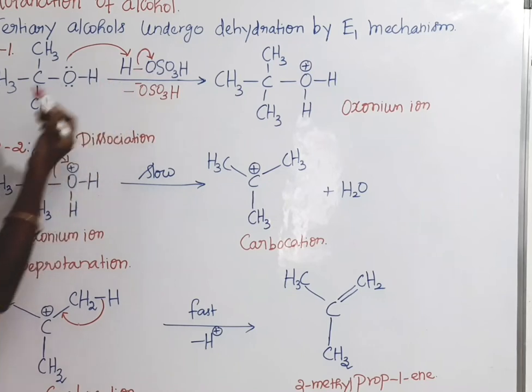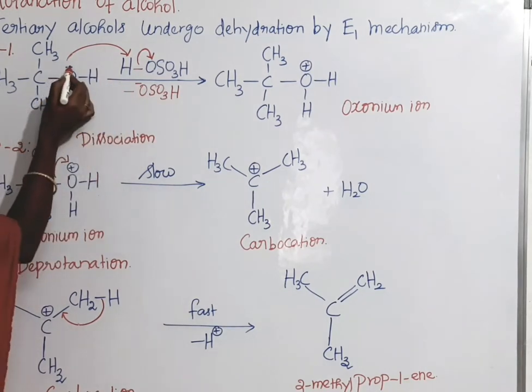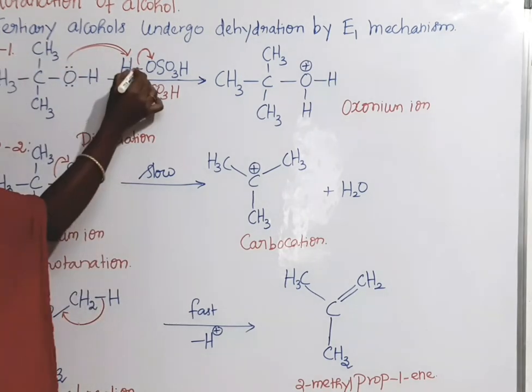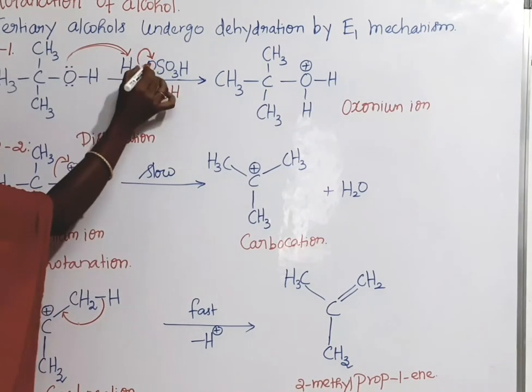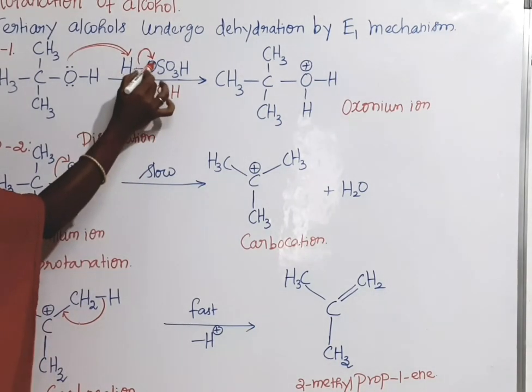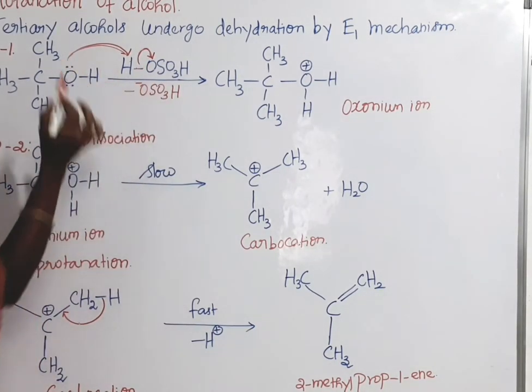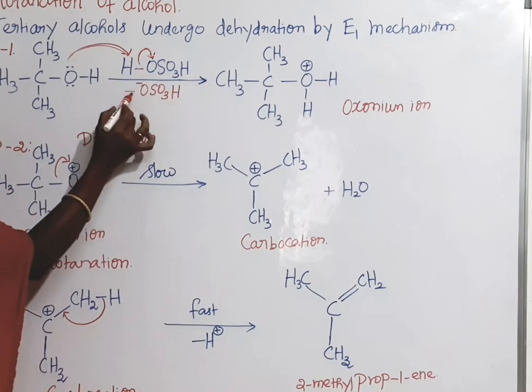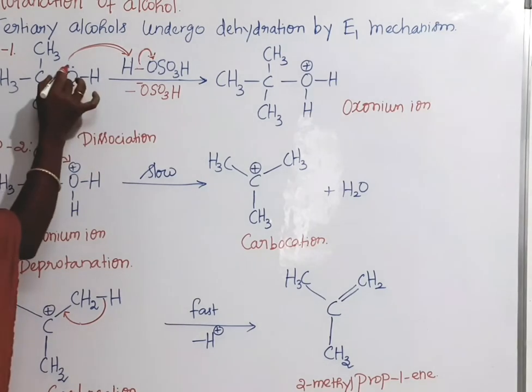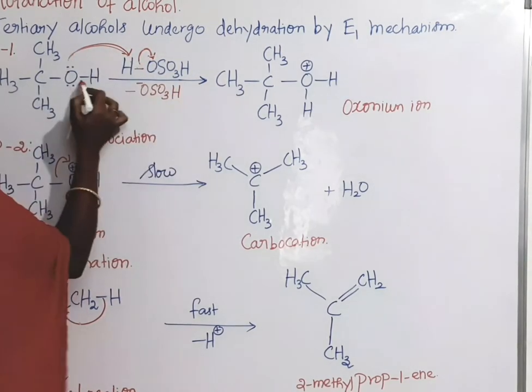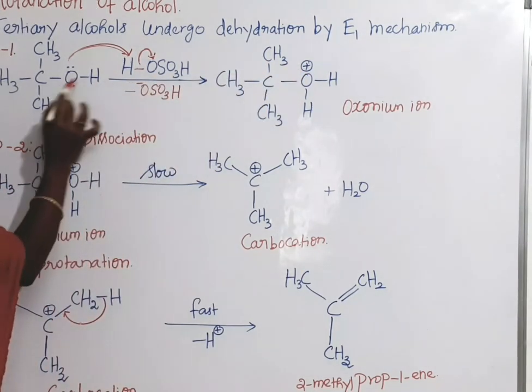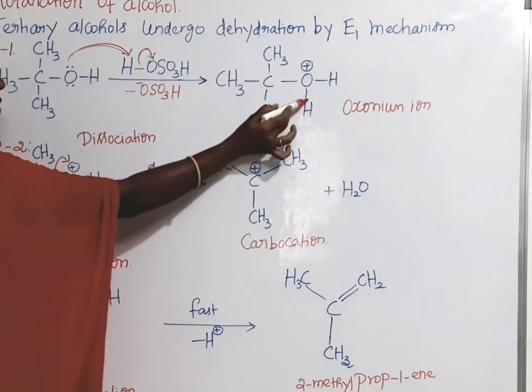Now we see how this reaction happens. Here in oxygen, a pair of electrons is located. In hydrogen, this bond is shifted to oxygen which is carrying the negative charge. Then the hydrogen is removed, it eliminates as OSO3H. This oxygen is carrying the plus charge, so the oxygen has a bond formation. This is what we call the oxonium ion. This is the first step.